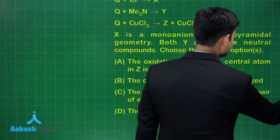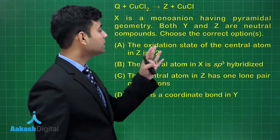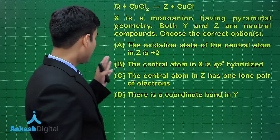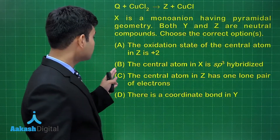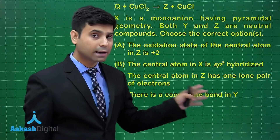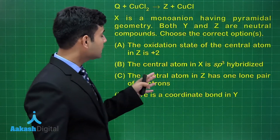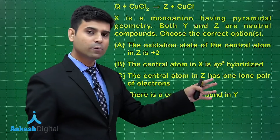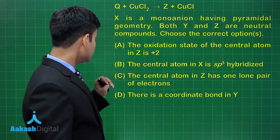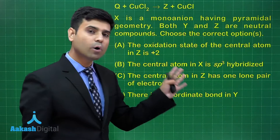Option A: the oxidation state of the central atom in Z is +2. Option B: the central atom in X is sp³ hybridized. Option C: the central atom in Z has one lone pair of electrons. Option D: there is a coordinate bond in Y.